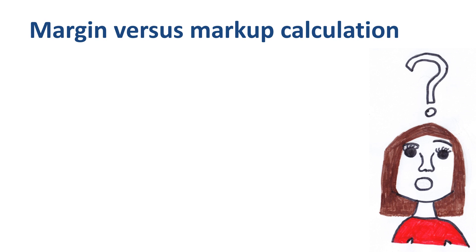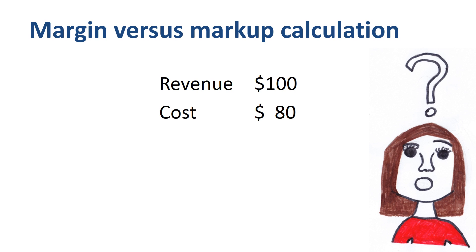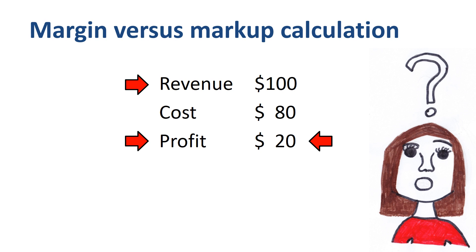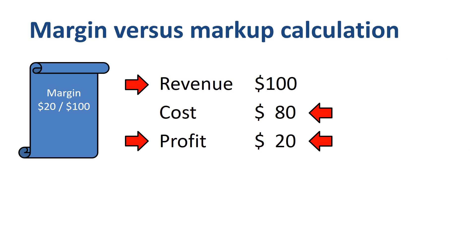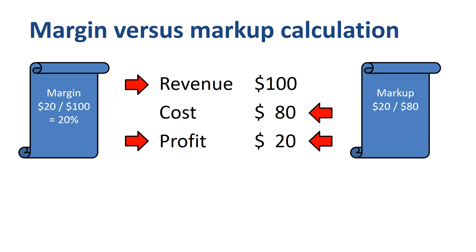We are going to walk through the calculation of profit margin versus profit markup. In this example, let's take a revenue for your product or service of $100, a cost of $80, and a profit of $20. In both the margin and the markup calculation, the profit of $20 is the numerator in the equation. However, what you take as the denominator is different. When you calculate margin, you divide profit by revenue. When you calculate markup, you divide profit by cost. So for margin we take $20 profit divided by $100 in revenue, which equals 20%. For markup we take $20 profit divided by $80 cost, which is a 25% markup.